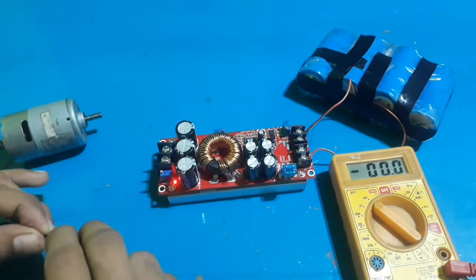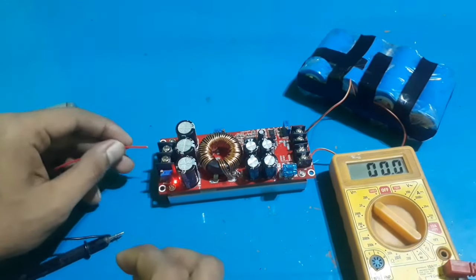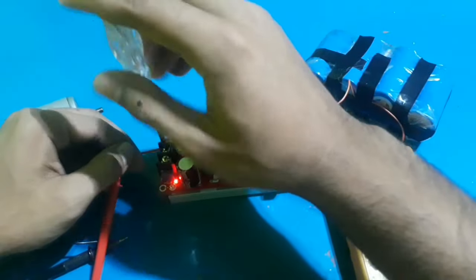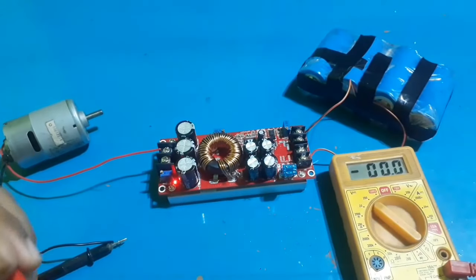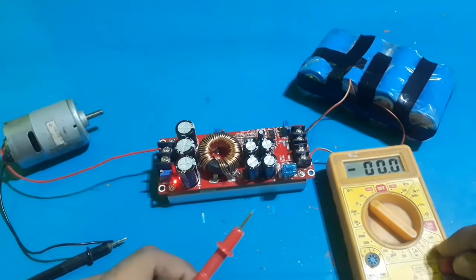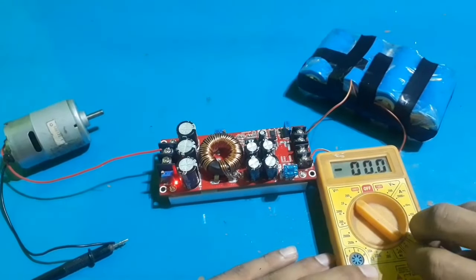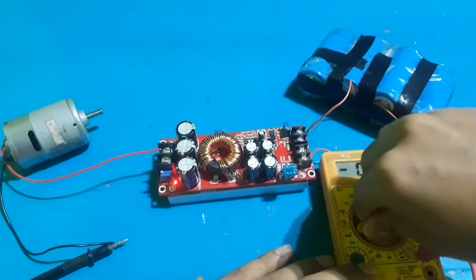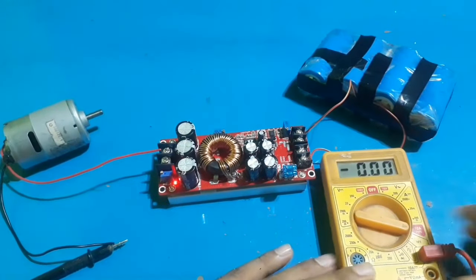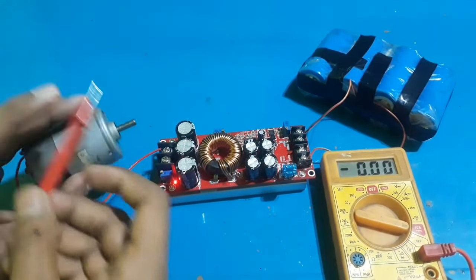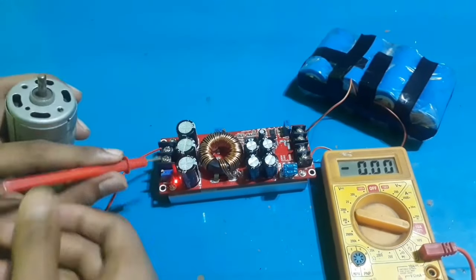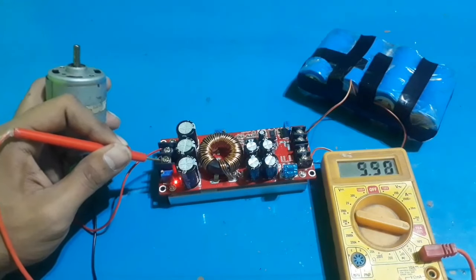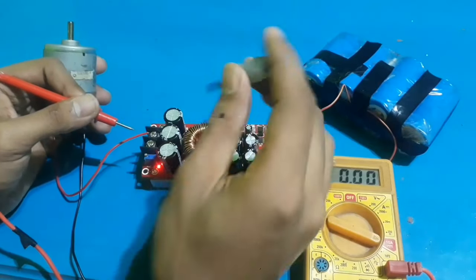Now to measure the output current, I connected the multimeter and motor in series. The multimeter is set to measure 10 amp current. It's around 5 to 7 amps.